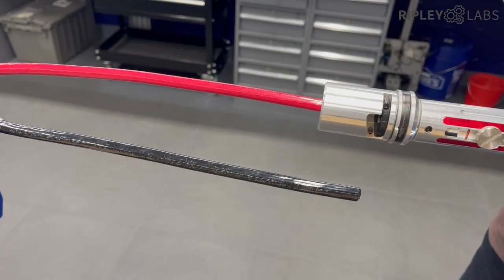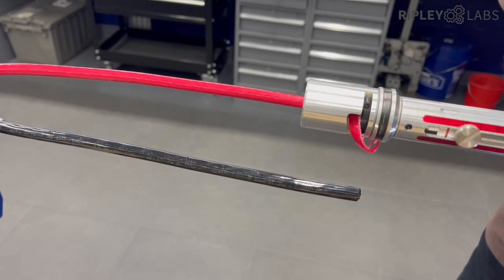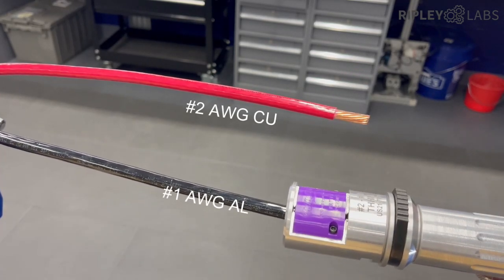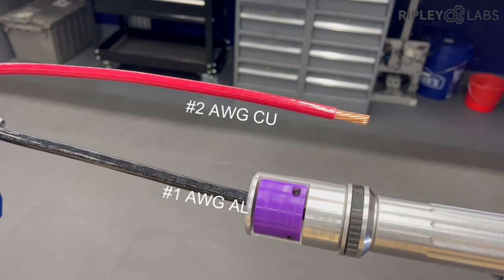This is an example of our Purple VariStrip bushing stripping both 2-gauge copper and 1-gauge aluminum cable. Keeping a slow and controlled drill speed ensures cleaner strip performance.